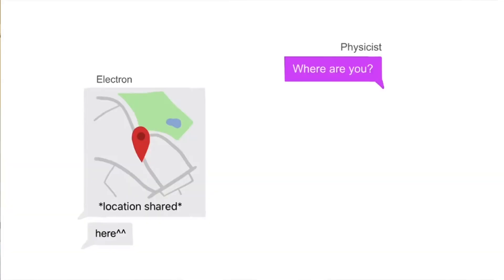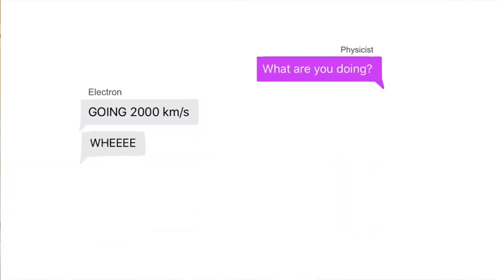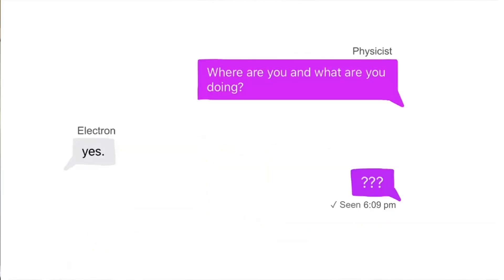When you want to know where they are, they seem like a particle, and when you want to know what they're doing, they behave like waves. But you can't ask both personalities at the same time. Basically, they've got some serious commitment issues, and that means we can only guess where they might be.